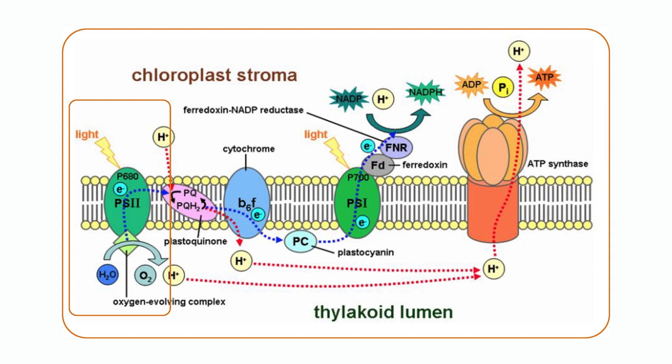When light is absorbed, it excites an electron that is passed on to an acceptor molecule and is replaced with an electron from water. This reaction is the splitting of water and releases O2 — the air we breathe.